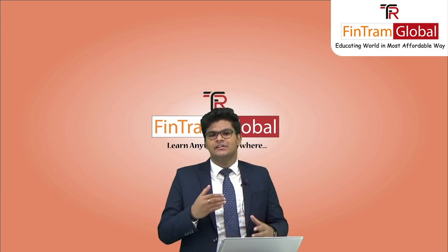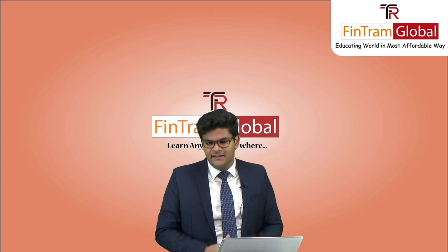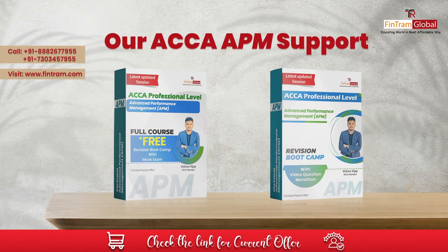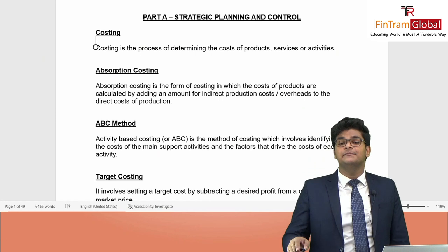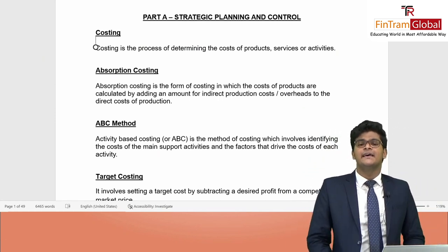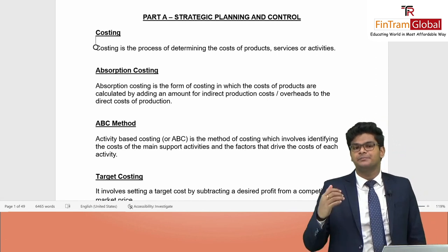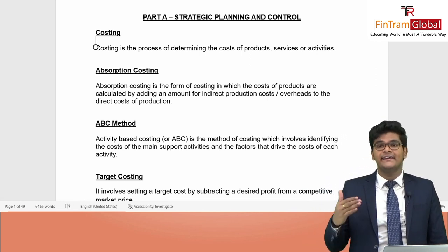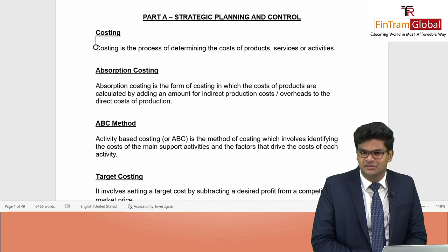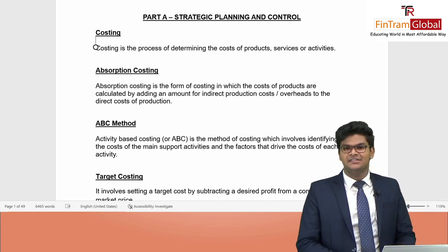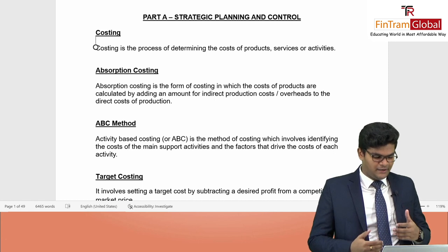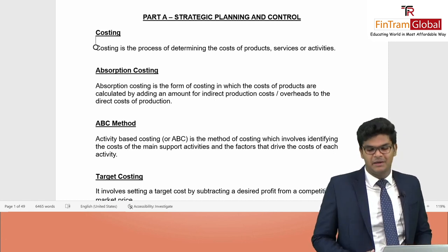Now let's get started with phase one — the revision phase. As you can see here, we have the entire APM syllabus partitioned into various syllabus areas. Let's get started with the first syllabus area, Part A — Strategic Planning and Control — where we cover a lot of interesting topics. Let's quickly go through each of these topics one by one so that you can refresh your memory.